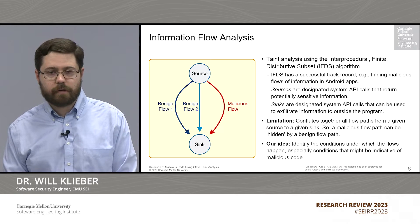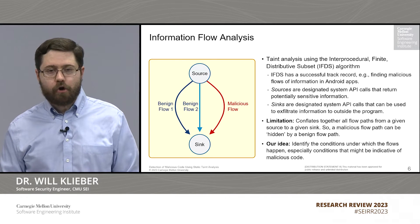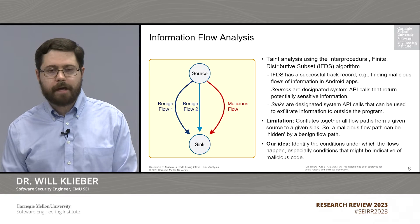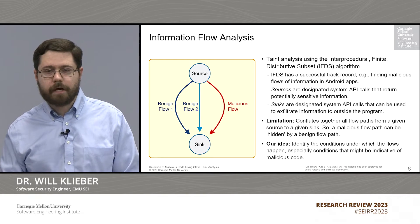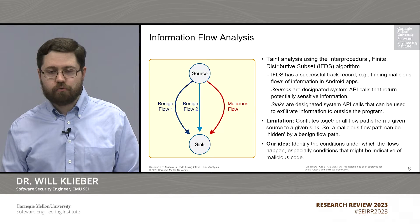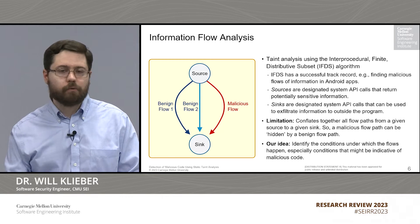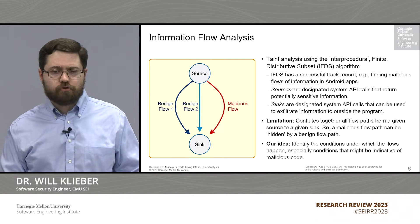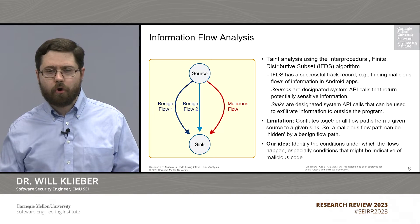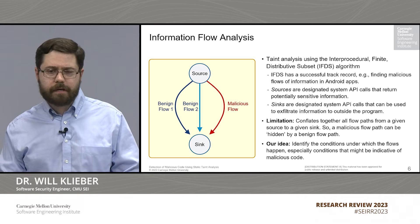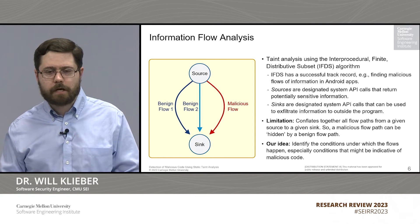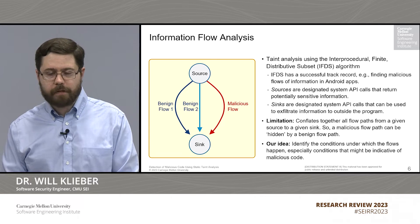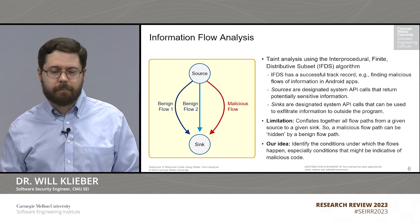With this approach, sources are designated system API calls that return potentially sensitive information, and sinks are designated system API calls that can be used to exfiltrate data outside the program. For example, sending information over a network socket would be considered sending information to a sink. A limitation of traditional taint analysis is that it conflates together all flows from a given source to a given sink, meaning a malicious flow path can be hidden behind benign flow paths. Our idea is to identify the conditions under which the flows happen, and especially to highlight conditions that might be indicative of malicious code.